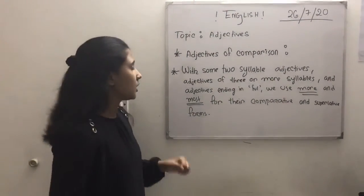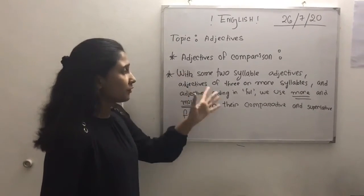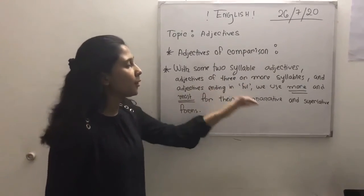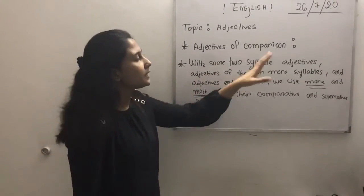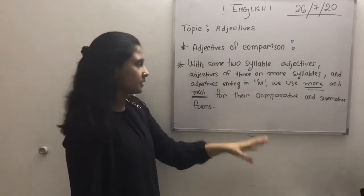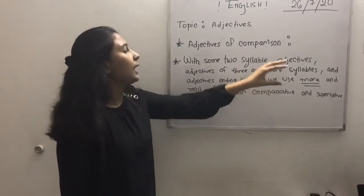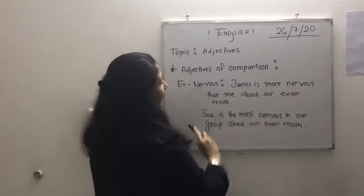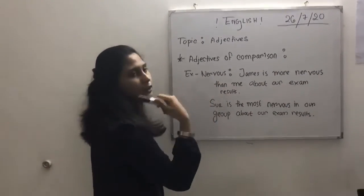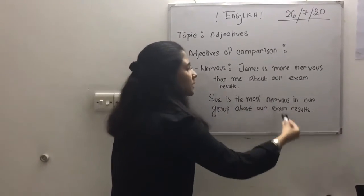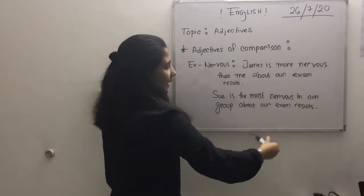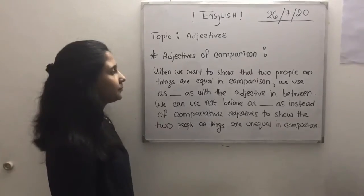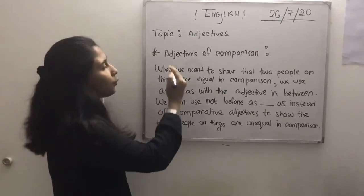With some two-syllable adjectives, adjectives of three or more syllables, and adjectives ending in '-ful', we use 'more' and 'most' for their comparative and superlative forms. For example: 'James is more nervous than me about our exam' — this is the comparative form. 'Su is the most nervous in our group about our exam results' — this uses 'most' for the superlative form.